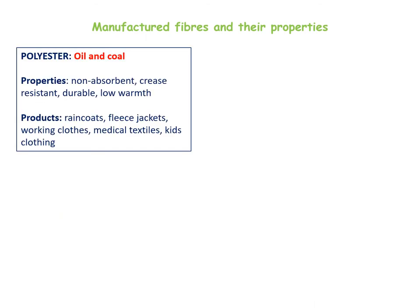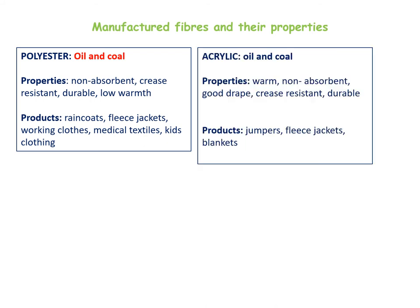We are now going to look at manufactured fibres and their properties and sources. Polyester comes from oil and coal. It is a non-absorbent fabric, crease resistant with high durability, making it suitable for things like raincoats, fleece jackets, working clothes and even medical textiles. Acrylic also comes from oil and coal. The properties are that it is warm, non-absorbent, has a good drape, crease resistance and high durability. It is quite thick, very similar to wool, making it suitable for jumpers, fleece and jackets.